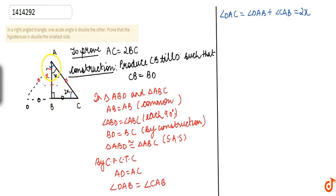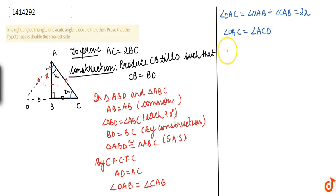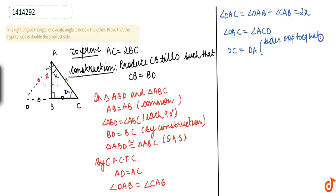We can also say that angle ACD is equal to angle ADC. This means side DC is equal to side DA, the reason being that sides opposite to equal angles are equal.